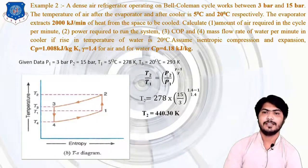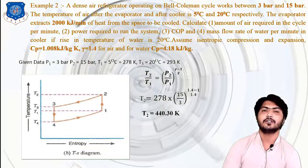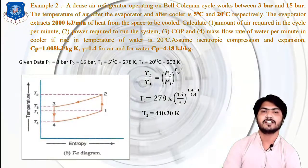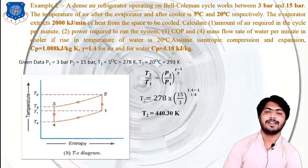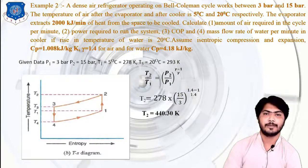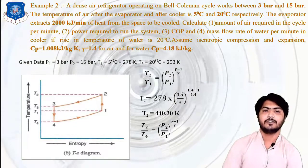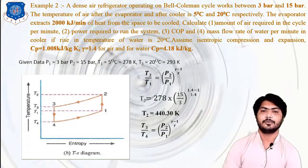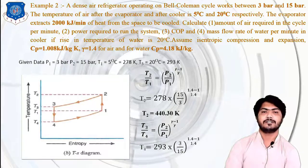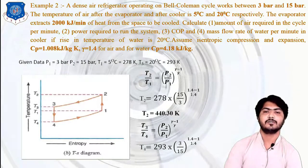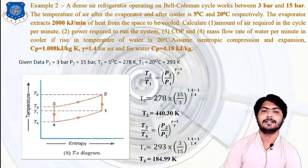Next, calculate T4 at the outlet of the expander or turbine (process 3 to 4, isentropic expansion). Using the equation T3/T4 = (P2/P1)^((γ−1)/γ), substituting all temperature values, gamma, and pressure ratio, we obtain T4 = 184.99 K.